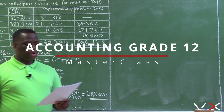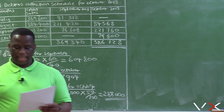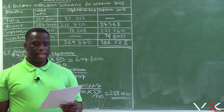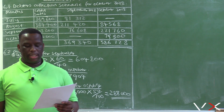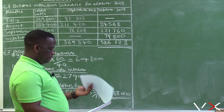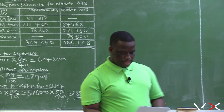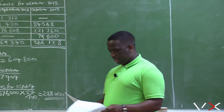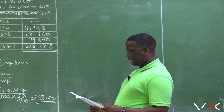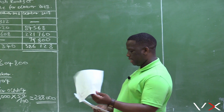Question 6.3 asks us to calculate the percentage increase in salaries of sales assistants for October 2018, and to explain whether they should be satisfied with this increase for 5 marks. We are still working on the cash budget for the November 2018 exam, question 6 and 6.3, where we want to calculate the increase in salaries of sales assistants for October 2018.